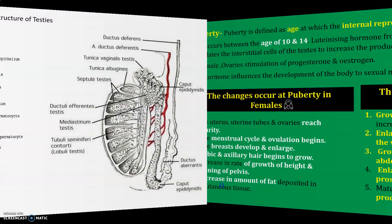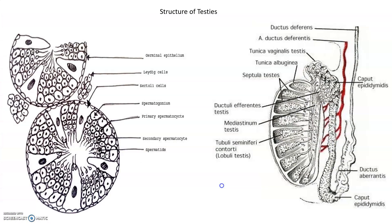The structure of the testes: it is important to know the cells present in the structure of the testes. These include primary spermatocytes, secondary spermatocytes, Sertoli cells, and Leydig cells — all important for the production and release of semen and the fluids present in the testes.